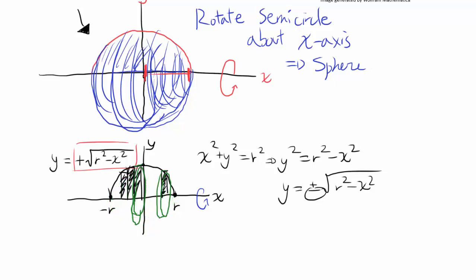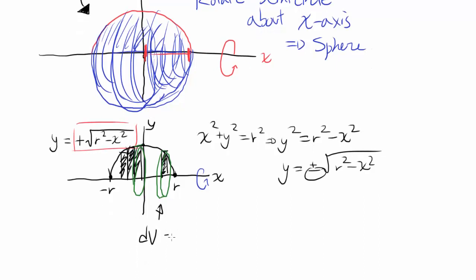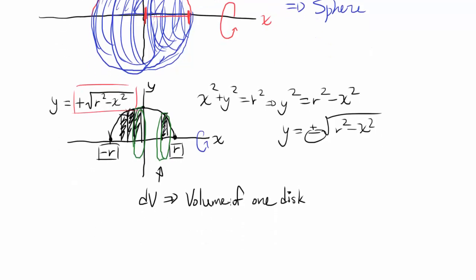If we can find the volume of one disk — which I'll denote as dv, a small part of the total volume — and then add up all those dv's by integrating from negative r to r, that gives us the volume of the entire sphere.